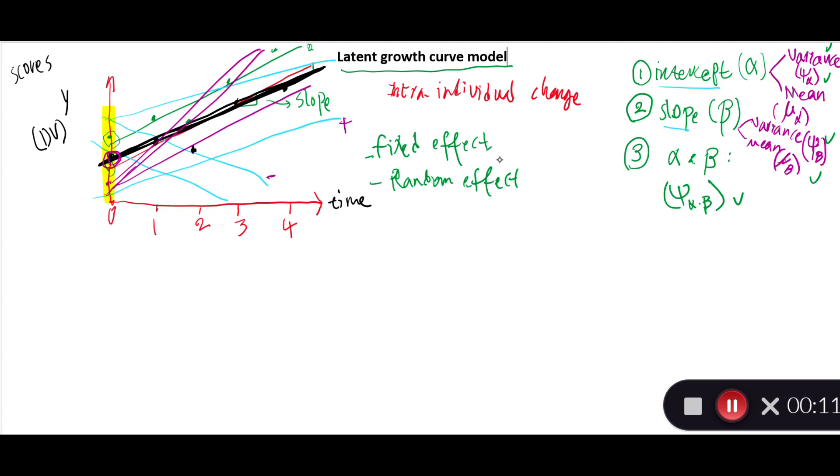Basically, these two terminologies are common between latent growth curve models and hierarchical linear modeling. I haven't made videos about hierarchical linear modeling, but I will do that in the future hopefully when I find time. What we need to do is to look into the variance as a random effect in slopes and intercepts, so I'll show you how that's going to be done.